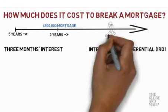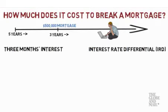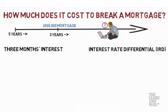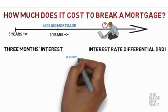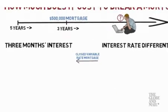The specific formulas can vary by lender, so it's important to call your lender and simply ask if there is a penalty, and if there is, exactly how much it is. But let's see how these estimated penalties might be calculated. If you have a closed variable rate mortgage, it's relatively simple — your penalty might be three months interest.